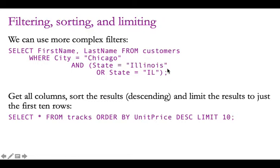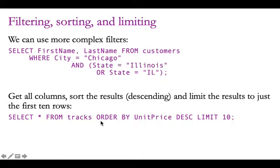We can also use a star instead of specifying column names — like SELECT star FROM tracks. Tracks in this case refers to a music database. I've added ORDER BY unit_price, where unit_price is the name of a column, so we're ordering the results by that column's value, and that ordering is descending. That's what DESC means, and it's limited to just 10 results. So these are the top 10 most expensive tracks — we're getting all tracks, sorting them by price, and taking the top 10.